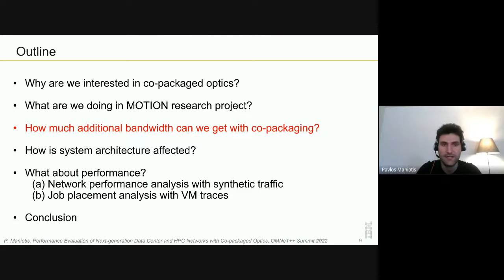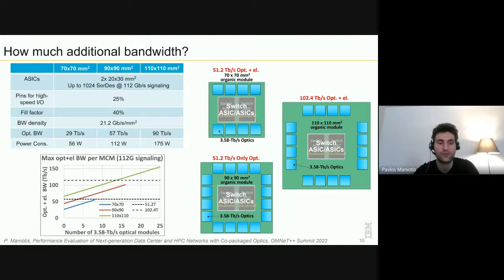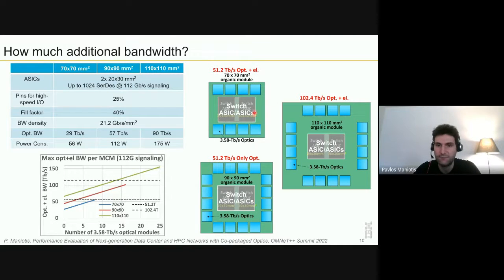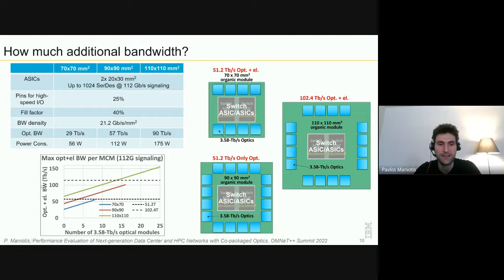Now that I've given you an idea of what we are developing in the project, the next question we had to answer is: how much additional bandwidth could we get with these co-packaged optics modules? To answer this we did a scalability analysis, considering different carrier sizes: 70×70, 90×90, and 110×110 millimeters. We assumed two switch ASICs and, for the remaining area on the package, a fill factor of 40% — meaning we can use 40% of the remaining area to place optical modules.